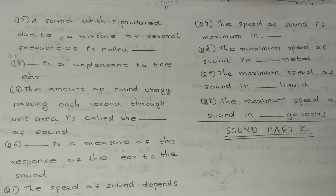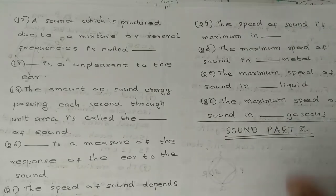Q19: The amount of sound energy passing each second through unit area is called the dash of sound. Q20: Dash is a measure of the response of the ear to the sound.